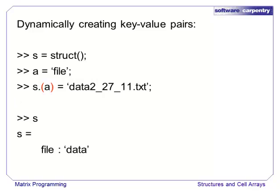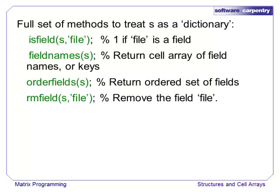In order to use the contents of a variable as a key in a structure, we have to surround it with parentheses, which tells MATLAB to use the value of the variable rather than the literal string that we typed in. Using the methods isField, fieldNames, orderFields, and rmFields, and using the parenthetic access method, a structure can be used just like a dictionary in MATLAB.